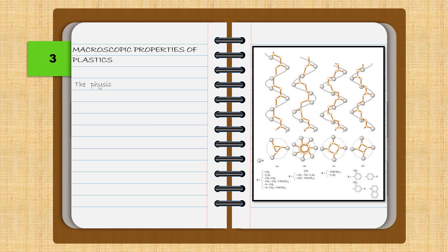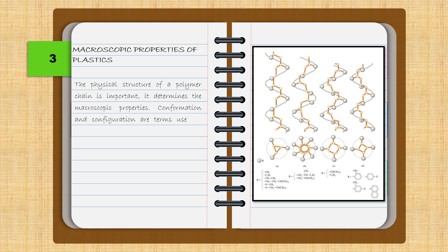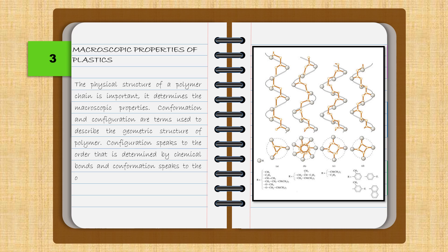The physical structure of a polymer chain is important — it determines the microscopic properties. Conformation and configuration are terms used to describe the geometric structure of a polymer. Configuration speaks to the order that is determined by chemical bonds, while conformation speaks to the order that comes from the rotation of molecules about a single bond.